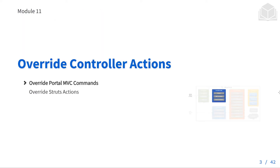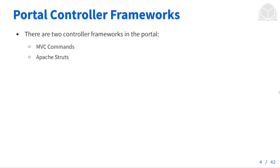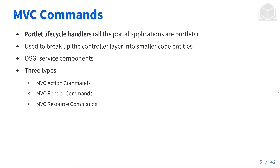We're going to start with overriding portal MVC commands. We have portal controller frameworks, and those two controller frameworks in the portal are MVC commands and Apache Struts. MVC commands are portlet lifecycle handlers, which means all the portlet applications are portlets. These are used to break up the controller layer into smaller code entities. These are all OSGi service components, and there are three different types of MVC commands.